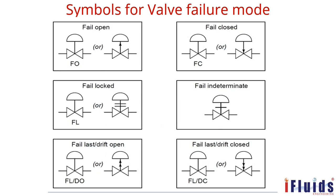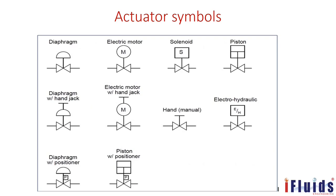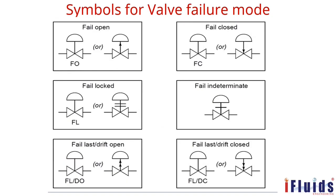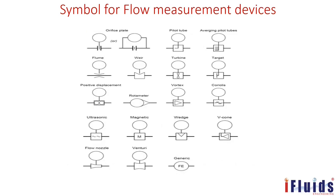Symbols for valve failure mode: below each valve symbol you have to show FO (fail open), FC (fail closed), or FL (fail locked). When there is an instrument error, signal failure, or power failure, the valve goes to open or closed position as specified. This must be mentioned in the P&ID.